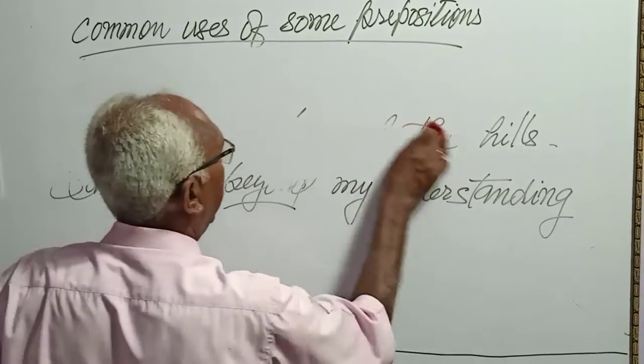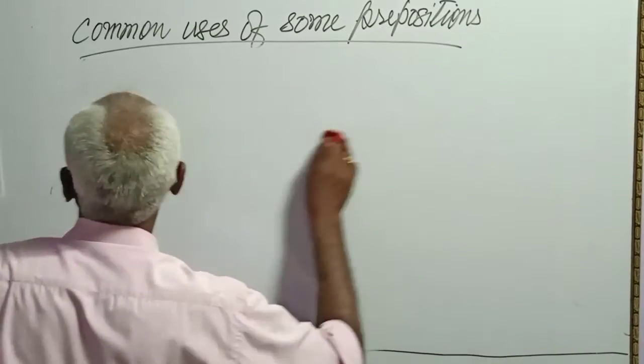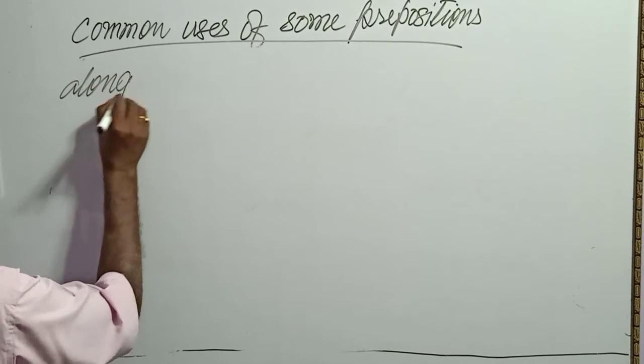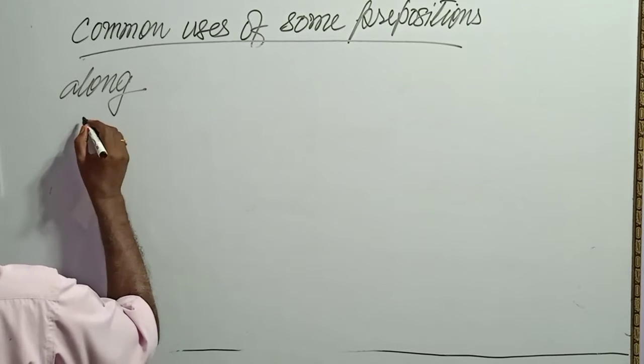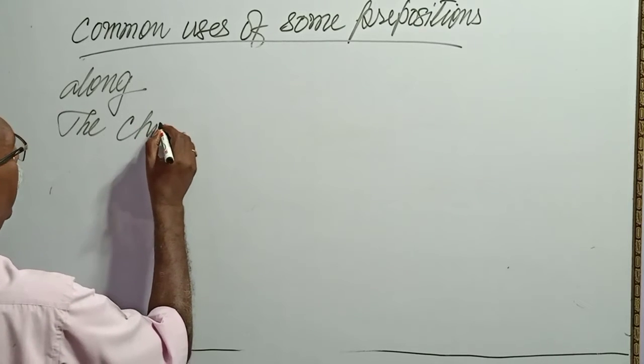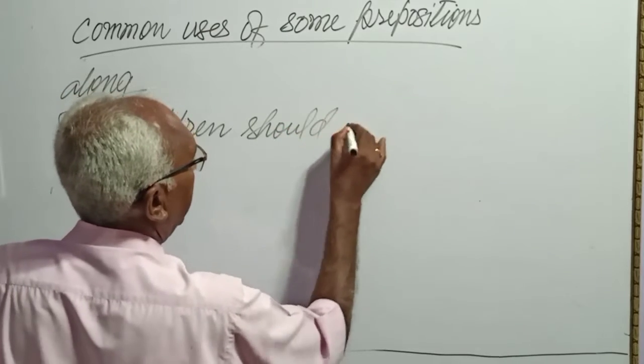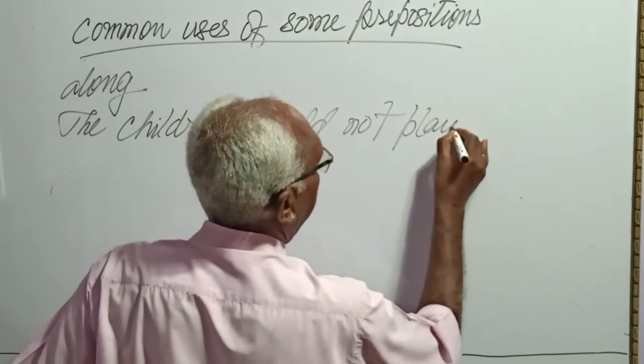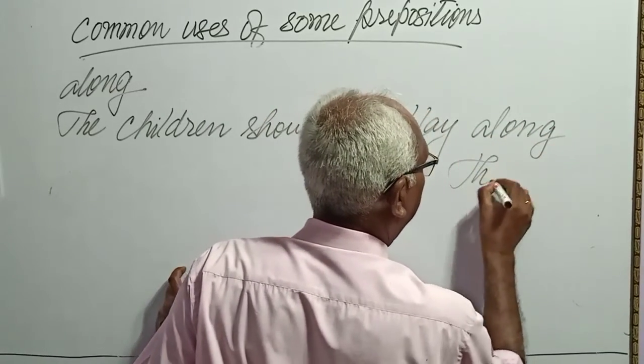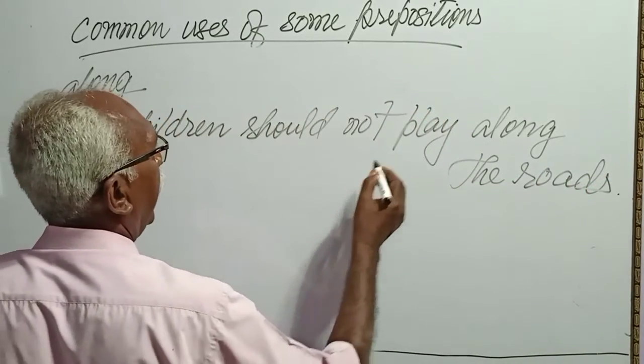Next preposition, that is along. Alone means sadak kinare, kinare. The children should not play along the roads. Sadak, sadako ke kinare. Along kinare ya sadak ke kinare.